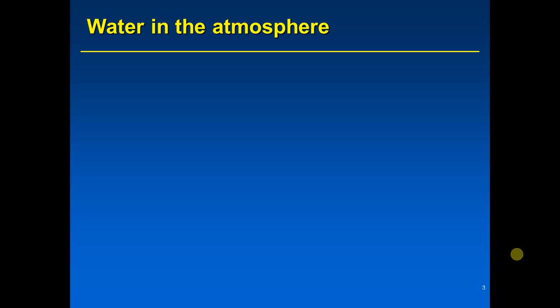When we talk about clouds, we need to discuss some important processes involving water, because clouds are made of water — either liquid droplets or ice crystals, or both. When you see a cloud, you're looking at a collection of liquid water droplets and/or ice crystals in great enough concentration and volume to appear visible with the naked eye. There is a misconception that clouds are made of water vapor, but water vapor is an invisible gas — a natural greenhouse gas that we can't see.